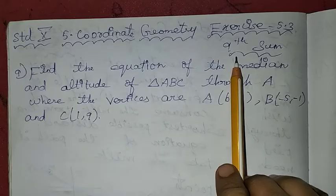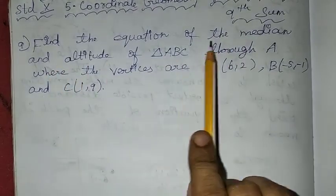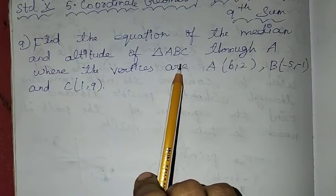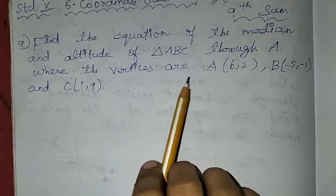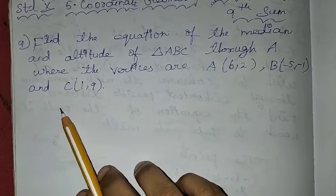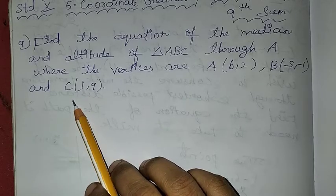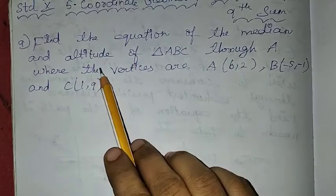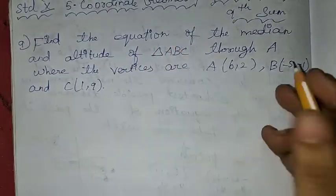9th sum. In the problem we will be talking about: find the equation of the median and altitude of triangle ABC through A, where the vertices are A, B and C points. First, we will understand.